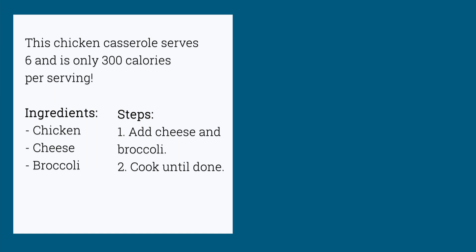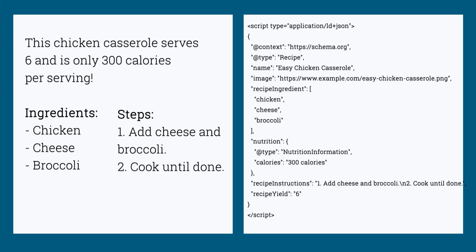So what is structured data? Structured data is a standardized format for providing context about web content. It's also referred to as schema markup. Google and other search engines use the structured data to better understand your content. To illustrate the need for structured content, let's use an example of a typical recipe page. If you have a recipe page with an intro that says this chicken casserole serves six and is only 300 calories per serving, and then it lists out the ingredients and directions that are needed, Google will crawl your recipe, but it may be hard for Google to determine the individual parts of your recipe like the nutritional information or the ingredients and directions.